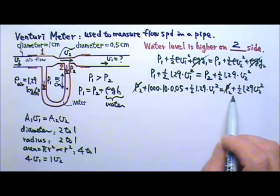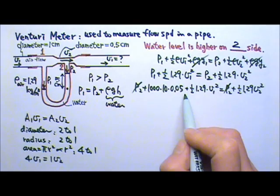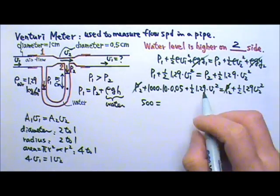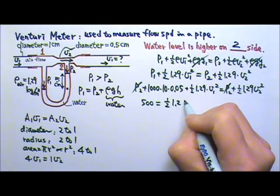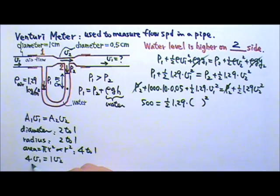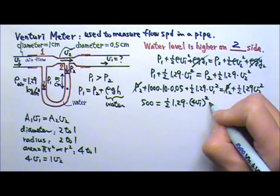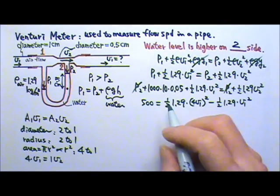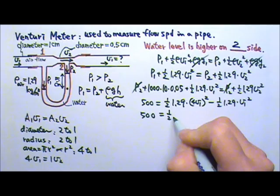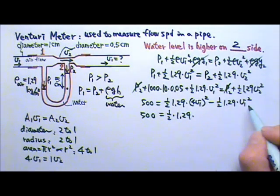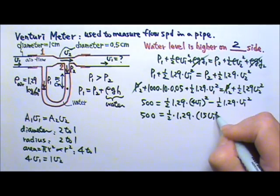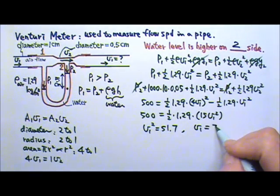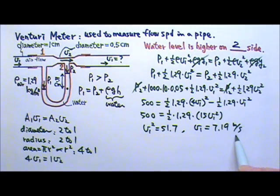Then I can reduce the number of unknowns in this equation from 2 to 1. So this term is going to become 500. And then I'm going to move this one over to the other side. This term is going to become 1 half times 1.29 V2 squared. And I'm going to use 4 times the V1 for V2. So I get 500 equals 1 half times 1.29 times 4 squared minus 1. So I'm going to get 15 V1 squared. And I'll be able to find V1 squared to be 51.7. And the V1 would be 7.19 meters per second. So that's the flow speed in the pipe.